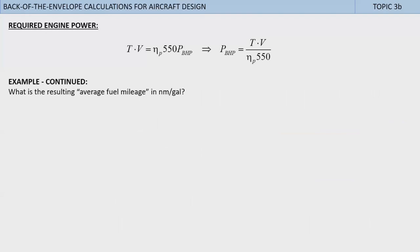For instance, what is the resulting average fuel mileage in nautical miles per gallon? The average specific range SR reveals this. It is given as the range R divided by the fuel weight Wf. Substituting previous numbers yields 3.7 nautical miles per pound. Multiply by 6 pounds per U.S. gallon to get 22.2 nautical miles per gallon.